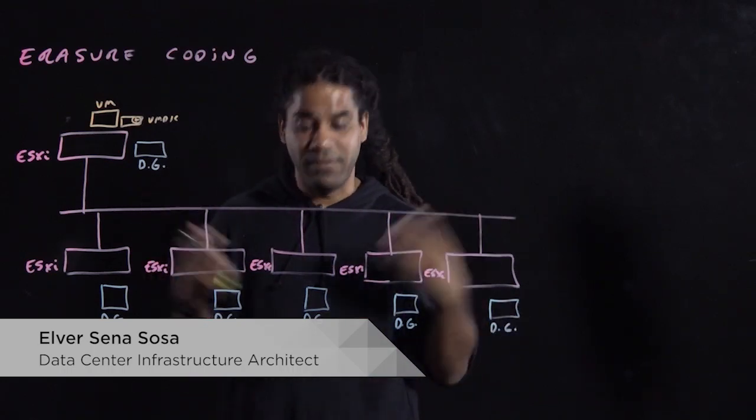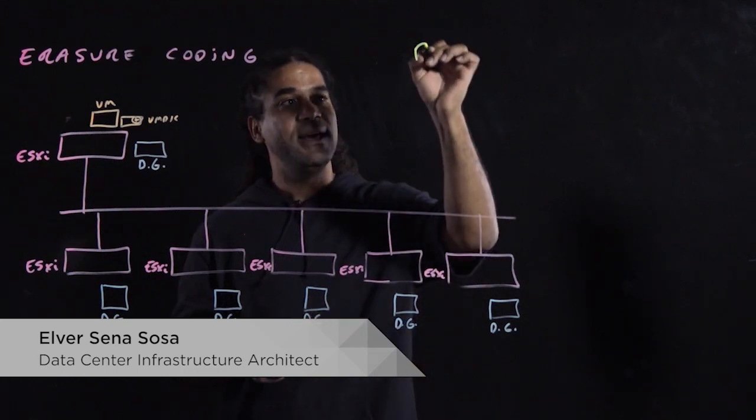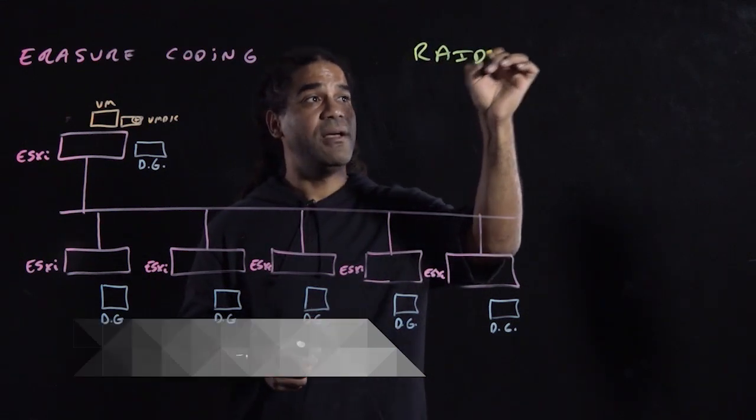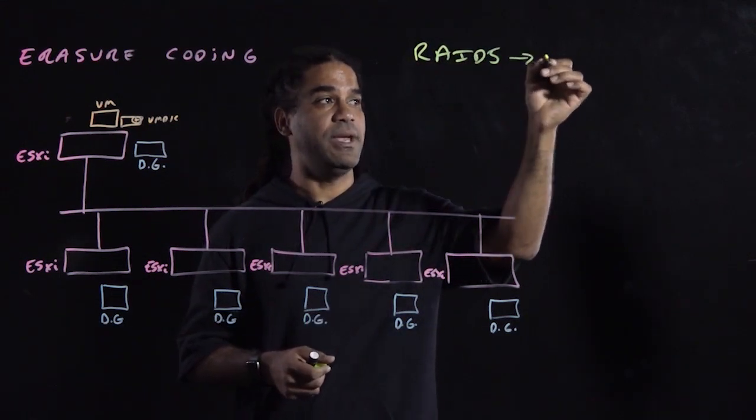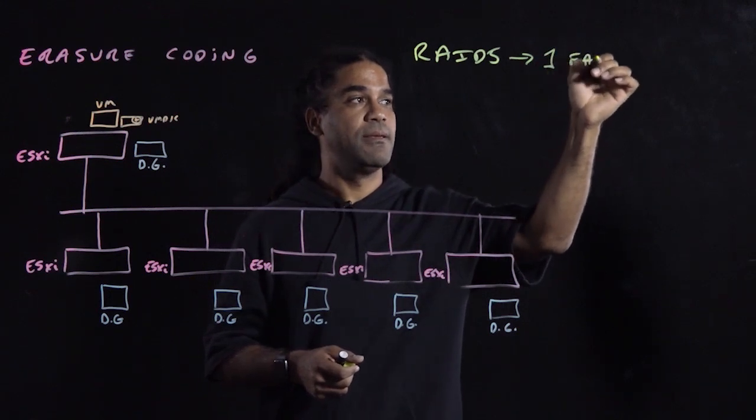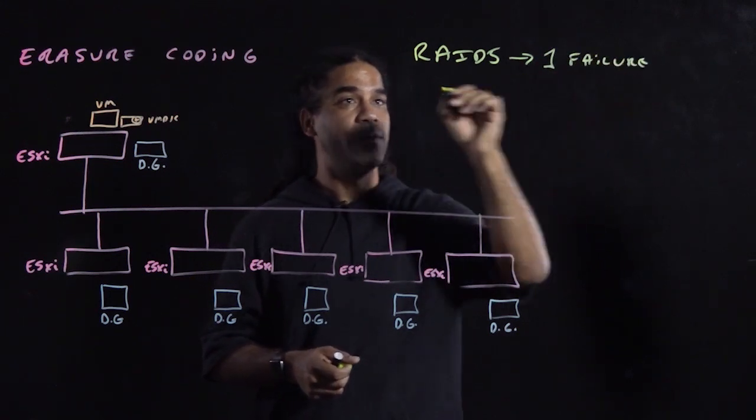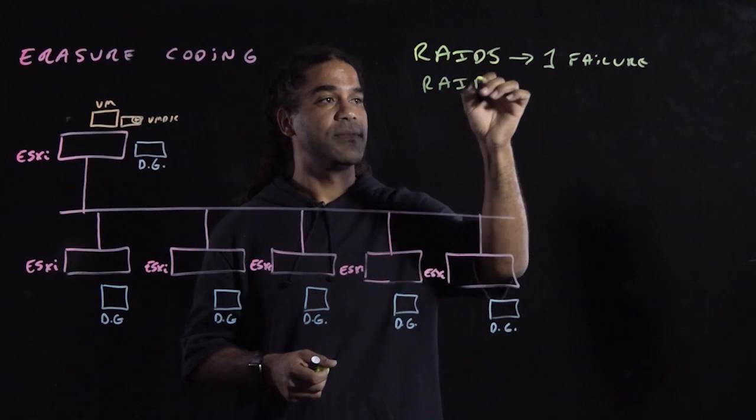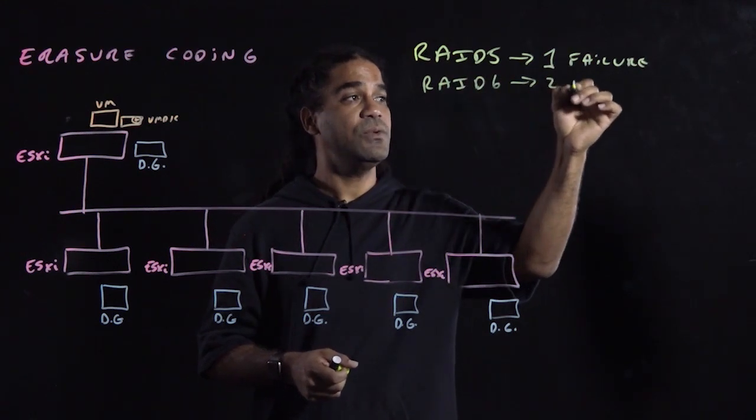Erasure Coding, we usually know it as RAID 5 or RAID 6. When we are doing a RAID 5 protection, that means that we can tolerate one failure. And when we're doing RAID 6 protection, it means that we can tolerate two failures.